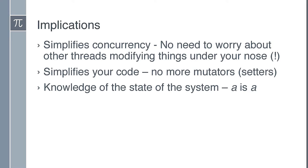Immutability also simplifies your code and increases your knowledge of the system. You know that if you have some A, whatever that A is, it will always have the same values and features. You don't need mutators — the only time you mutate something is when you initially create it, which once again reduces code.